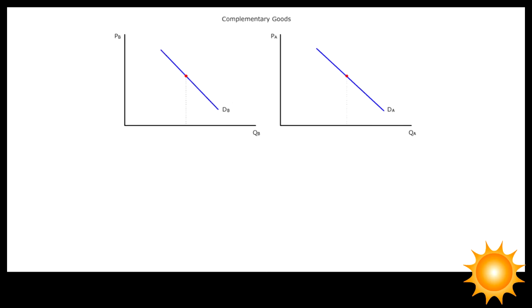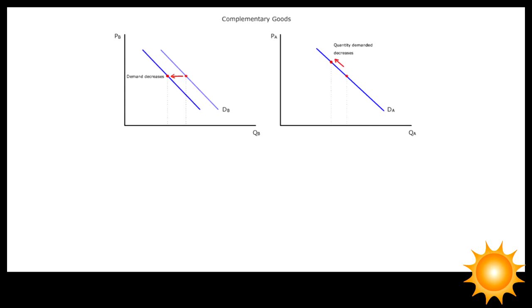A price increase in good A, on the other hand, will lead to a decrease in quantity demanded for good A, and a decrease in demand for good B.